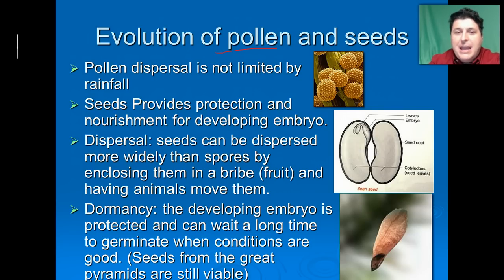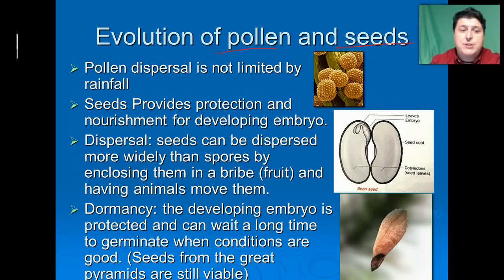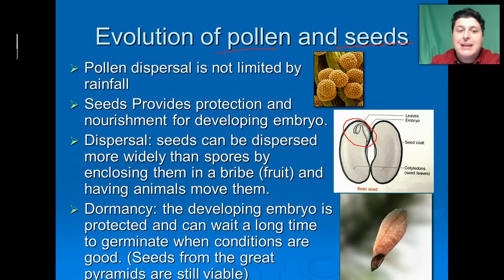Pollen and seeds really allowed land plants to flourish. Pollen contains our male gametes — the sperm — and the ability for pollen to move around is not limited by rainfall. In fact, pollen moves very easily even when it's dry. Seeds, unlike spores, have a protective layer that protects the little embryo. The seeds themselves are adapted with many different ways for dispersal.